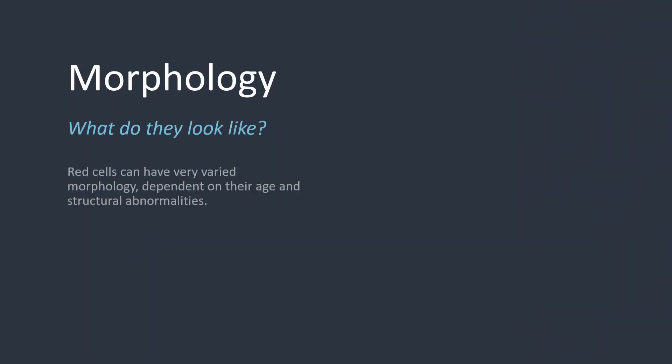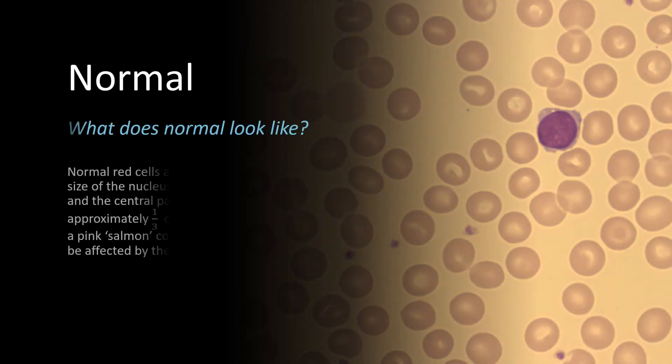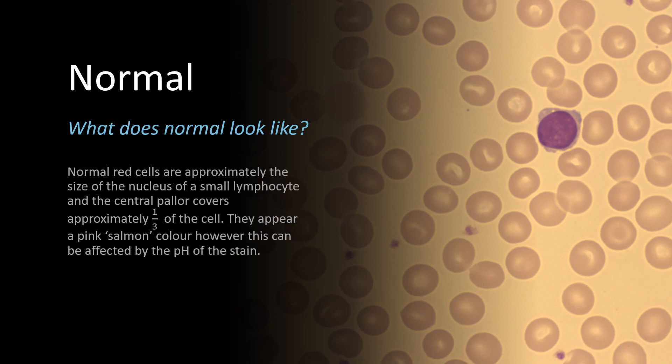Now let's talk about the morphology of the red cells — what do they actually look like when viewed under the microscope? Normal is always a good place to start. As a rule of thumb, a normal red cell is approximately the size of the nucleus of a small lymphocyte. The bit in the middle which looks empty is known as the central pallor and should cover about one third of the cell. Colors can be subjective, but a normal red cell should be a pink salmon color. However, this may be brighter or a duller color depending on the pH of the stain used.